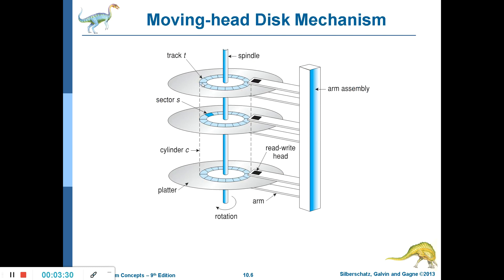The time for the desired sector to rotate under the disk head is called rotational latency. Looking at the disk structure, it is made up of platter-like structures — you can imagine them like CDs. Each one is called a platter. You can store information on both sides of these platters, and they are made of magnetic material, which is why they are called magnetic disks.